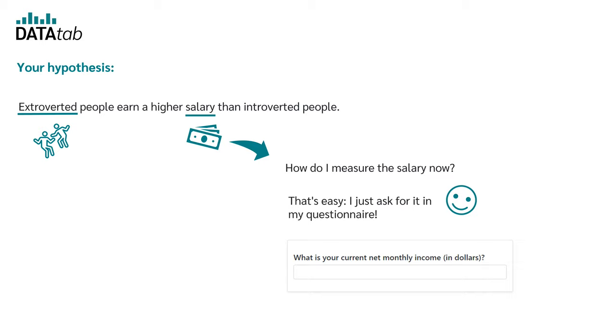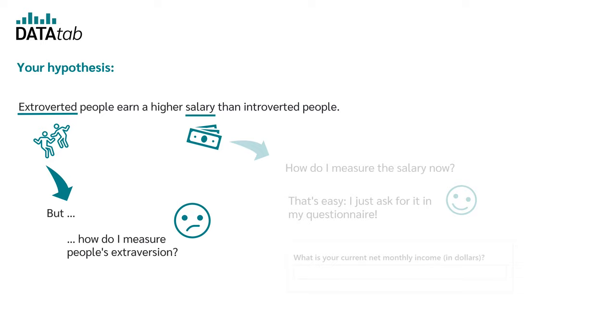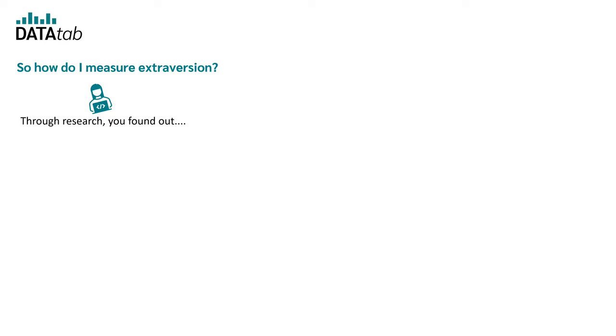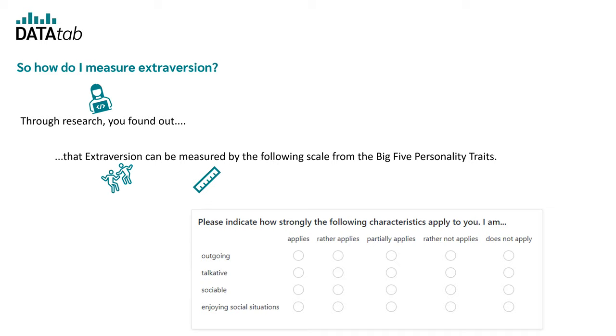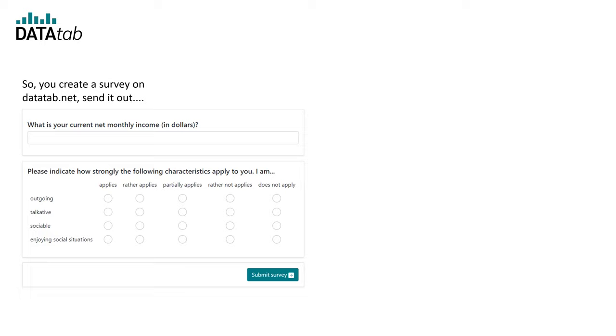But how do I measure people's extroversion? Let's say that through research you found out that extroversion can be measured by the following scale from the Big Five personality traits. Please indicate how strongly the following characteristics apply to you: I am outgoing, talkative, sociable, enjoying social situations. And the answers range from applies to does not apply. So now we have a scale with four items.